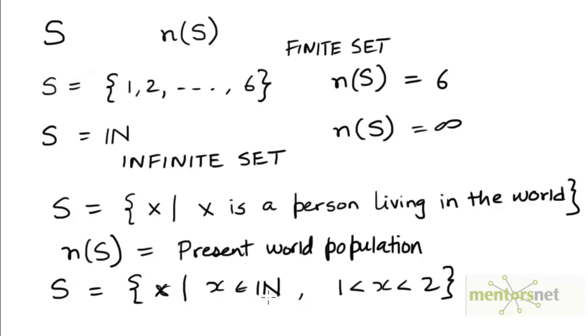Since X is given to be a natural number, it can only take values from 1, 2, 3 onwards. But we are also given that X is greater than 1 and it's less than 2. So it lies between 1 and 2.